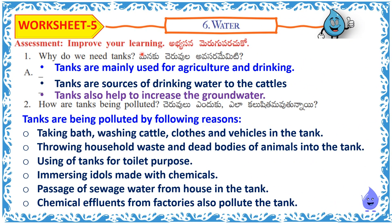Assessment: Improve your learning. Why do we need tanks? Tanks are mainly used for agriculture and drinking. Tanks are sources of drinking water to the cattle. Tanks also help to increase the groundwater level.